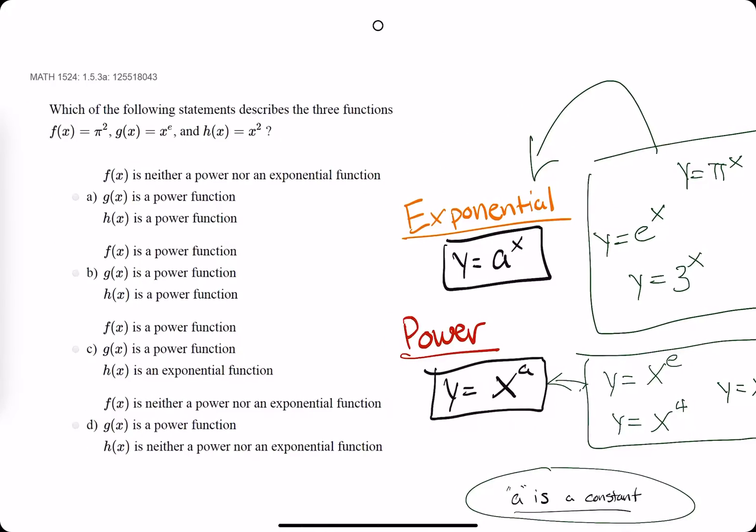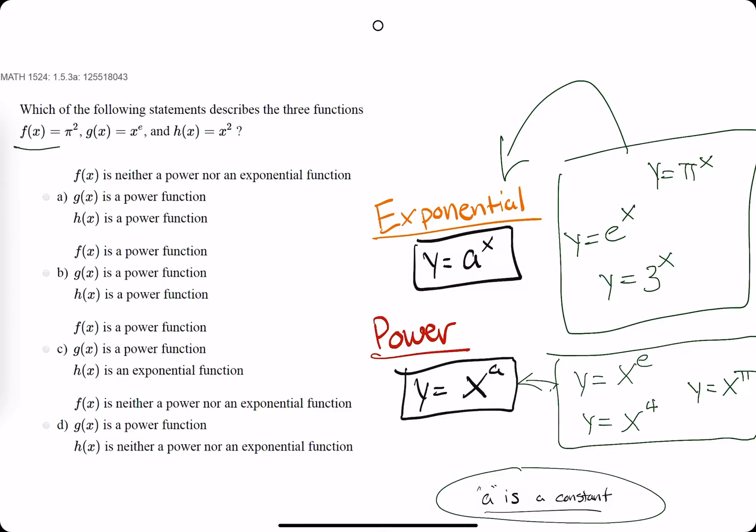So we check out what we got going on over here. So f of x is pi to the 2nd. Well, the problem with that one is that there's no x's in the entire function.